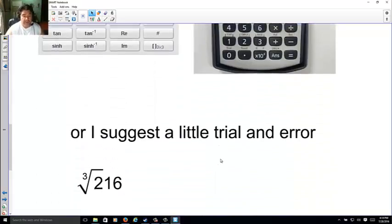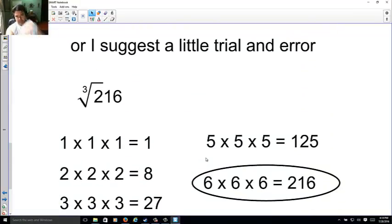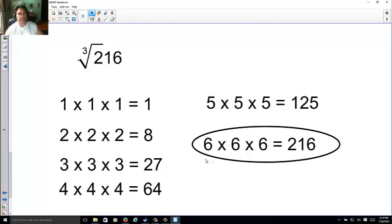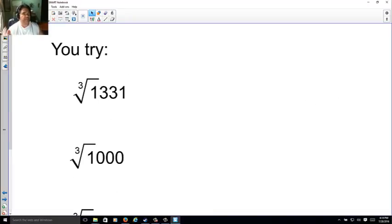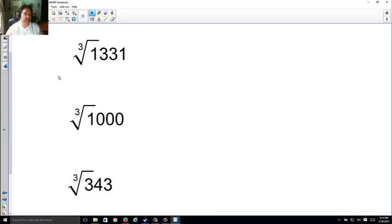Or, speaking of trial and error, you could just try a bunch of 3 numbers together, like 1 times 1 times 1, 2 times 2 times 2, and eventually you're going to hit pay dirt. As you notice, 216 is 3 6's multiplied together. So, the cube root of 216 is 6. However you get it is fine. So, you try these three. Go ahead at this time.